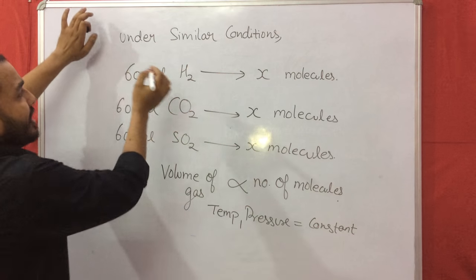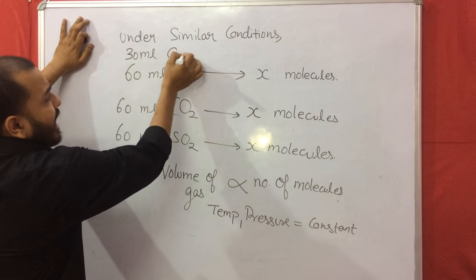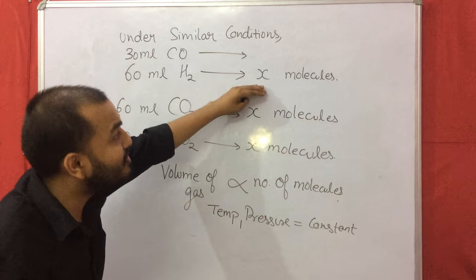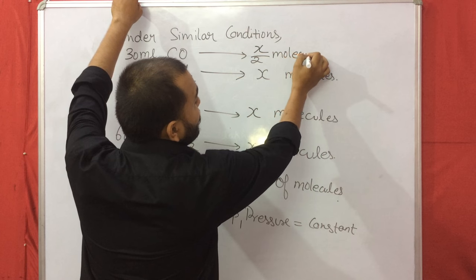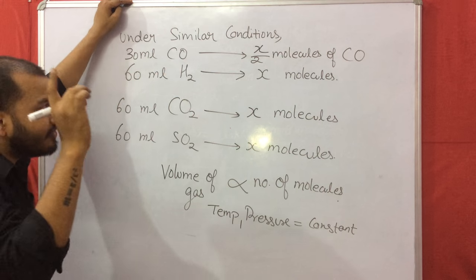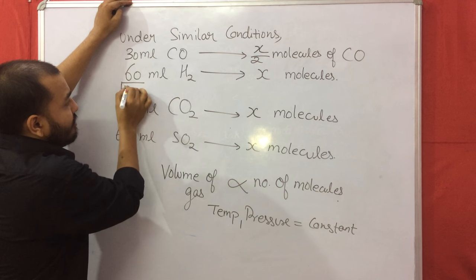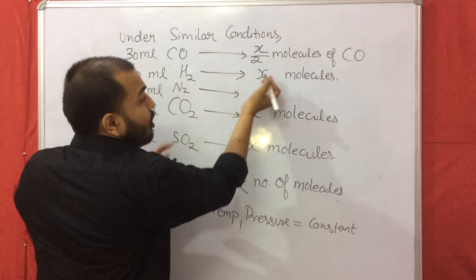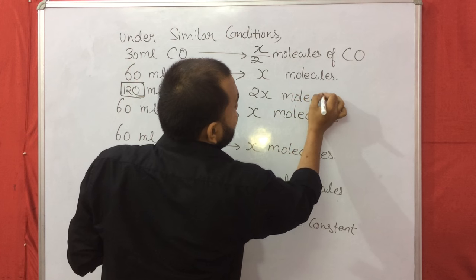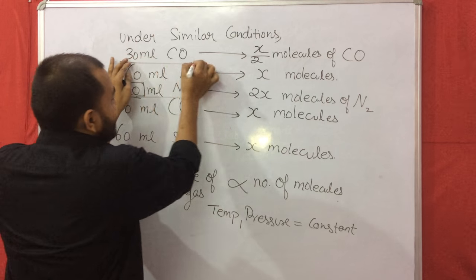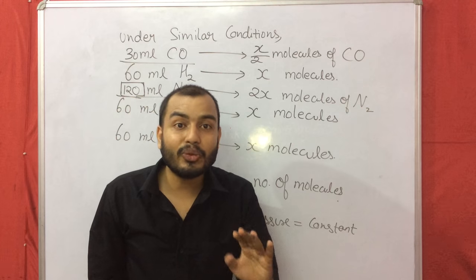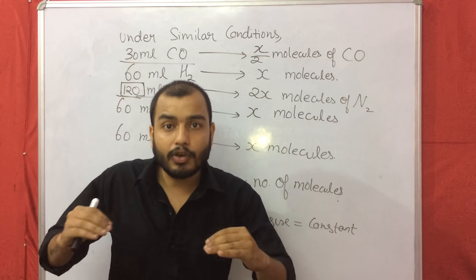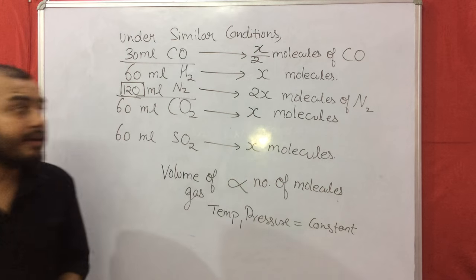Let us extend this. What if I have 30 ml of carbon monoxide? This is half the volume, so molecules will also become half — it will contain X/2 molecules of carbon monoxide. What if I have 120 ml of nitrogen? The volume has been doubled, so the number of molecules also doubles — 2X molecules of nitrogen. If volume is half, molecules halve; if volume is double, molecules double, provided temperature and pressure remain constant.